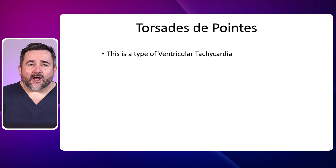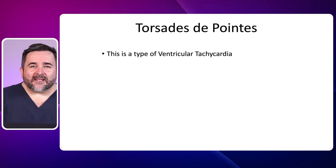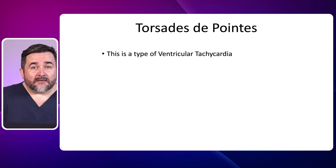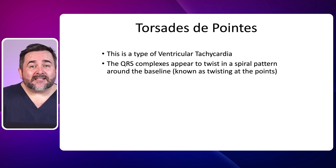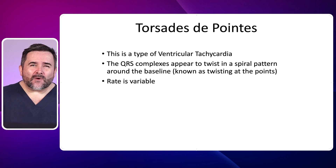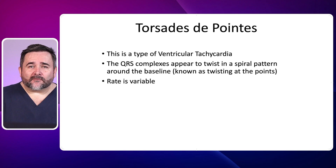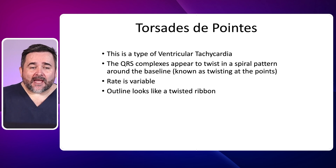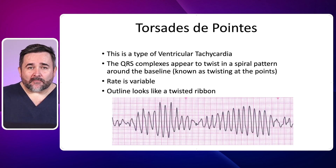Let's review a sample of polymorphic ventricular tachycardia called torsades de pointes. The QRS complex appears in a spiral pattern around the baseline. In French, it means twisting at the points. The rate is variable between 250 to 350. The outline of torsades appears like a twisted ribbon. The main treatment for torsades is magnesium.